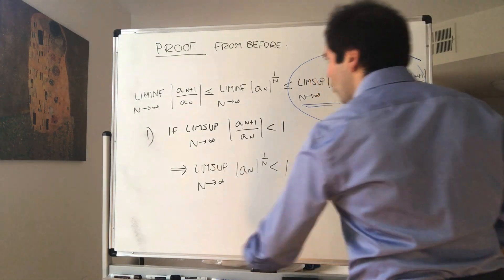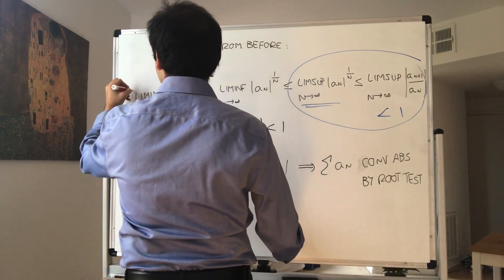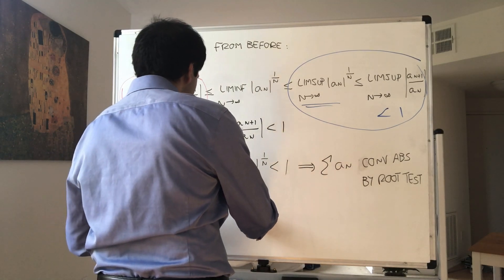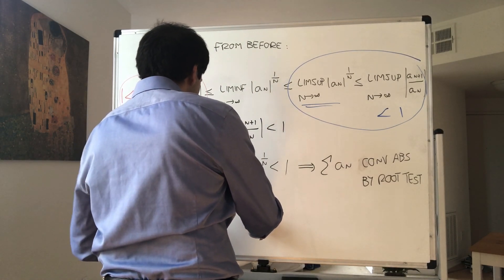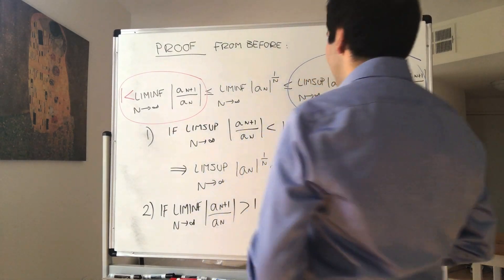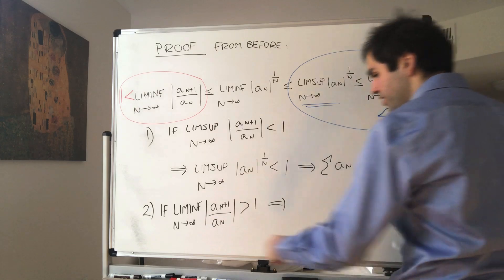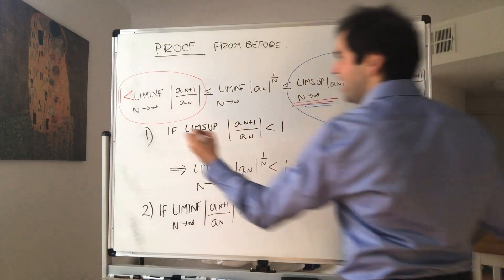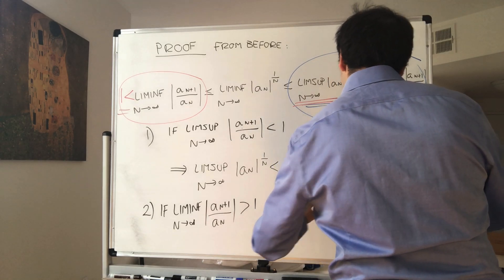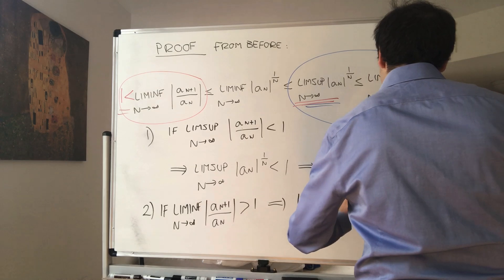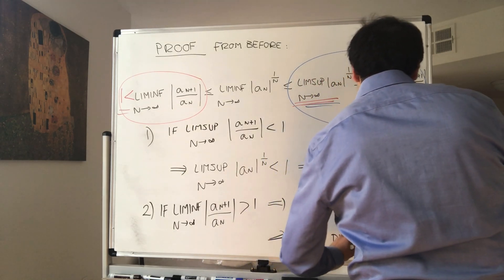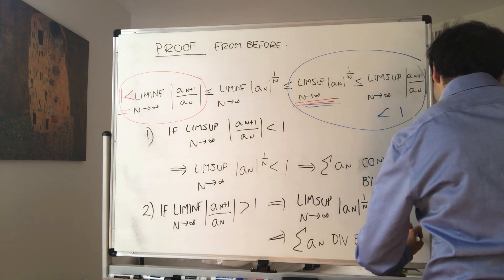Second case: what if the lim inf as n goes to infinity of the ratios a_{n+1}/a_n is greater than 1? Well, following the chain of inequalities, we get that the lim sup of the nth roots a_n^{1/n} is also greater than 1. And so, by the root test, the series diverges.